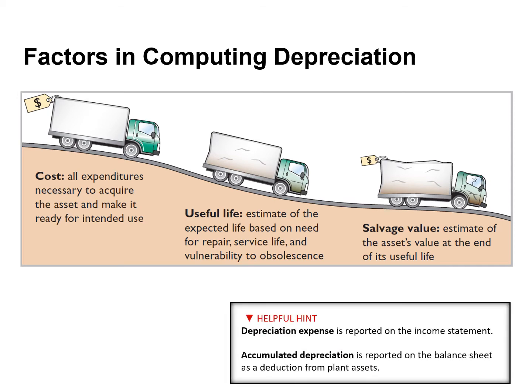Depreciation expense is reported on the income statement, whereas accumulated depreciation is reported on the balance sheet as a deduction from plant assets.